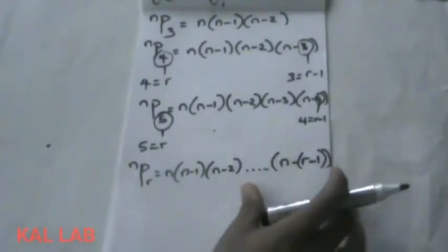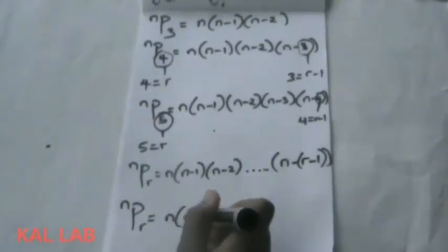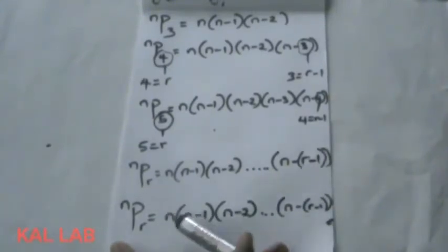Sorry, it should be in a bracket. So here, this is where we're going to start from. So with this equation, that's what we're going to use to prove the formula for permutation. Now let's get started. nPr equals n, n minus 1, n minus 2, down to n minus r minus 1.